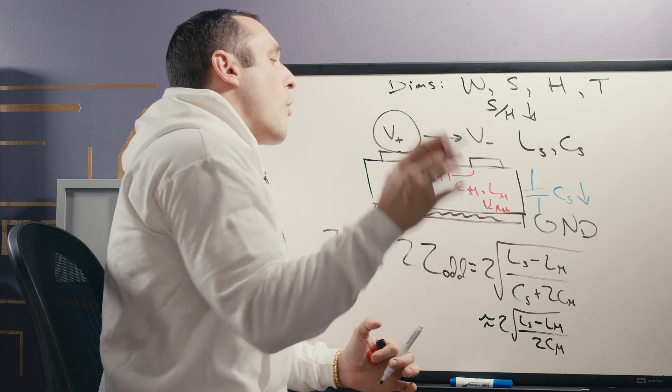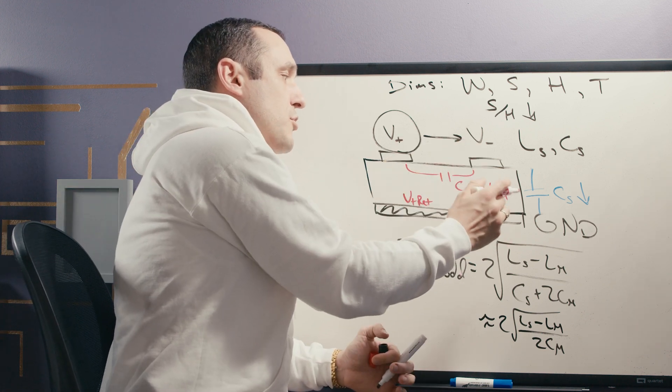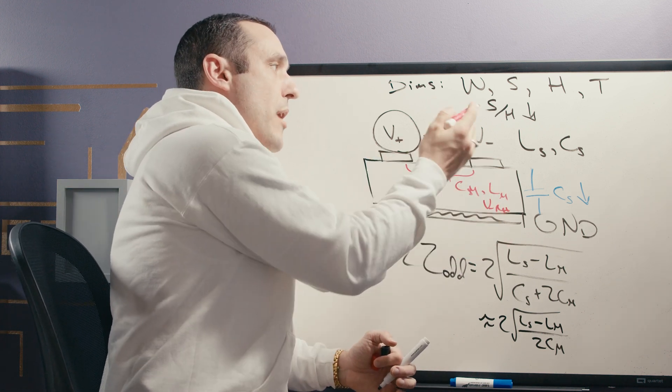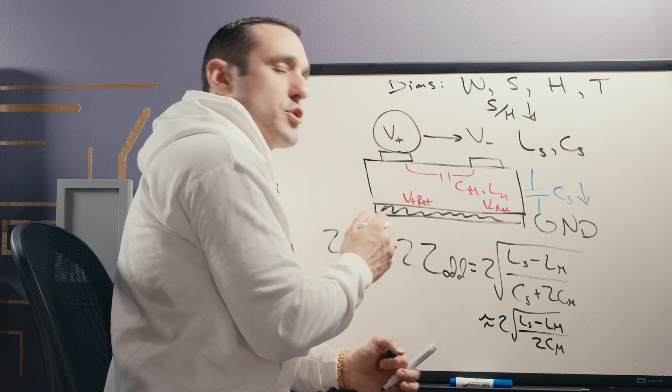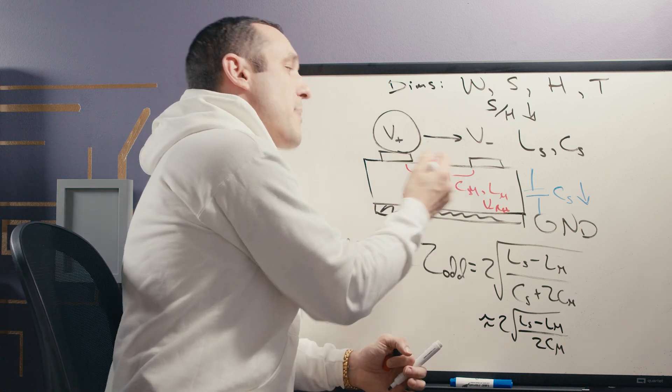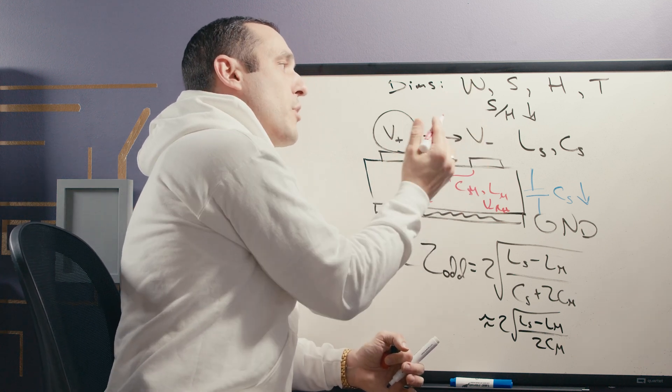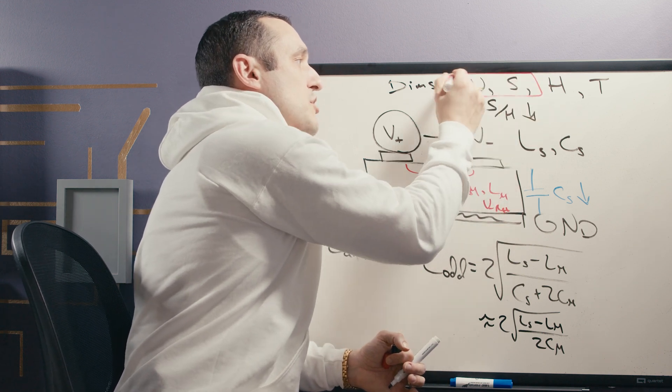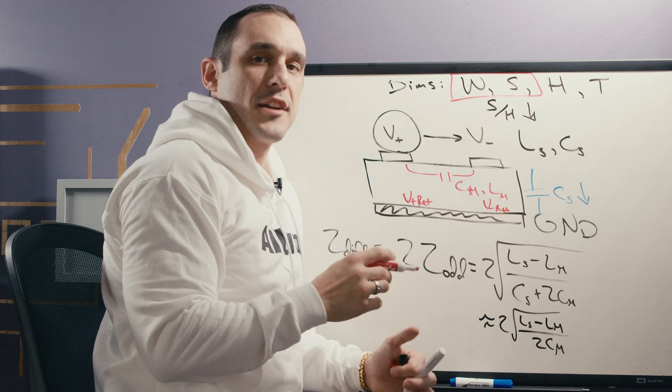So just to summarize, once you have that very thick substrate, the primary parameter determining the differential impedance is going to be the spacing between the traces and the width of the traces. So it's going to be these two parameters right here that are boxed in red.